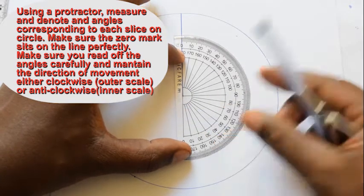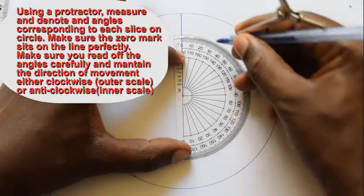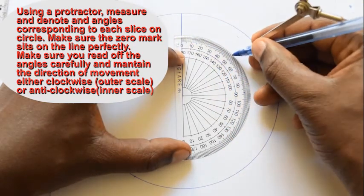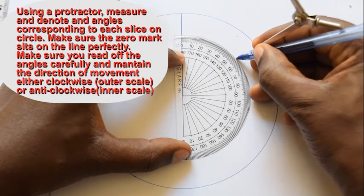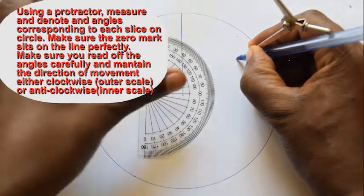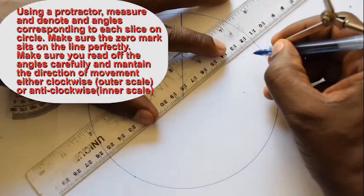Make sure the zero mark on the protractor sits on the line perfectly. Make sure you read off the angles carefully.